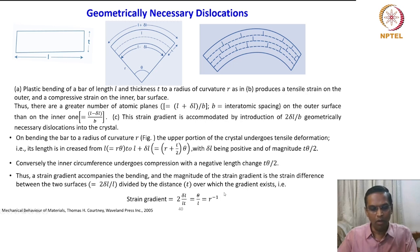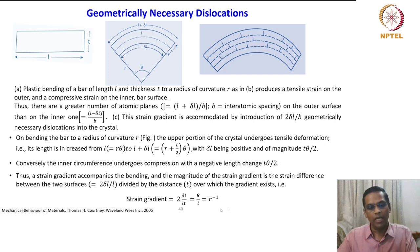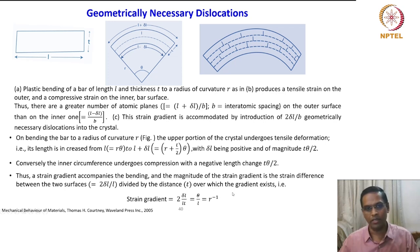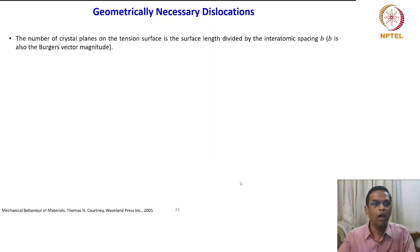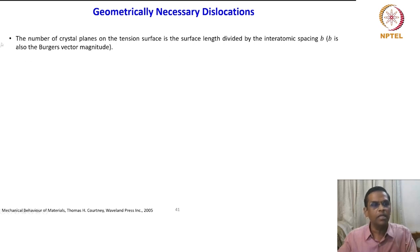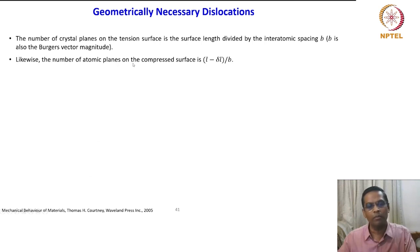What is a strain gradient? It is the rate of change of strain within the volume over which the plastic deformation takes place. The number of crystal planes on the tension surface is (l + delta l) / b, where b is the interatomic spacing or Burgers vector magnitude. Likewise, the number of atomic planes on the compressed surface is (l minus delta l) / b.